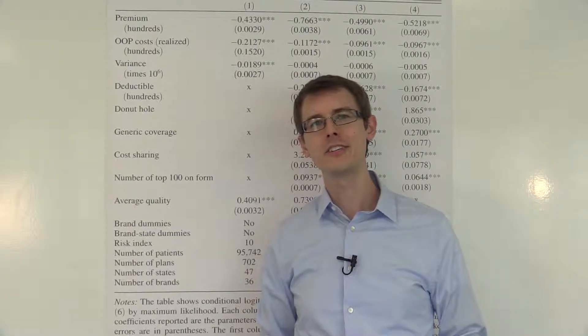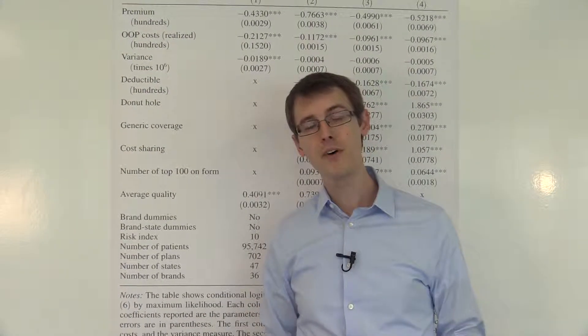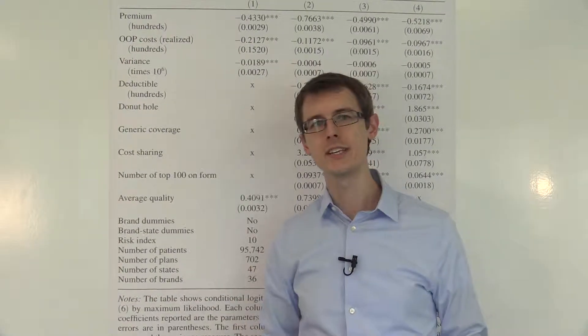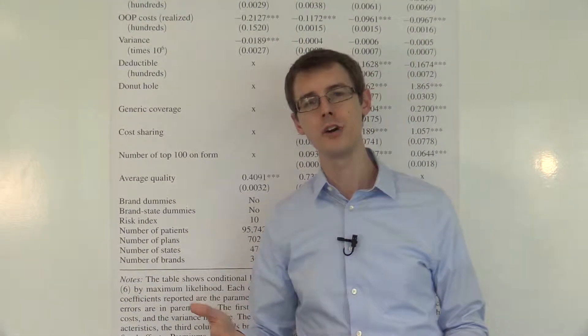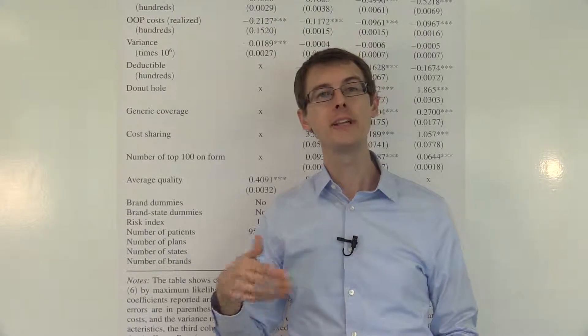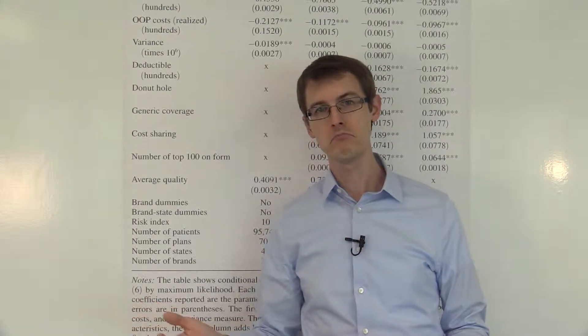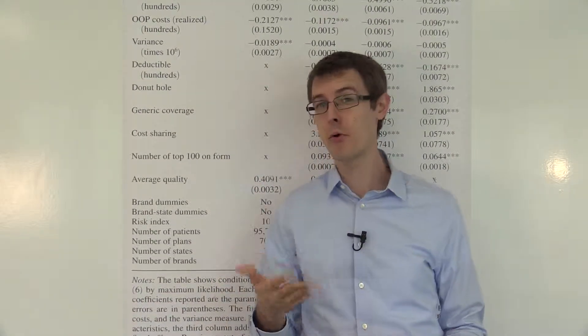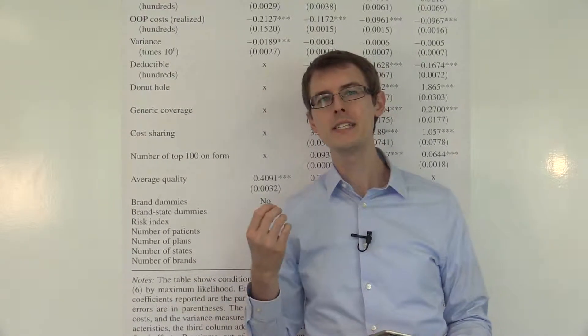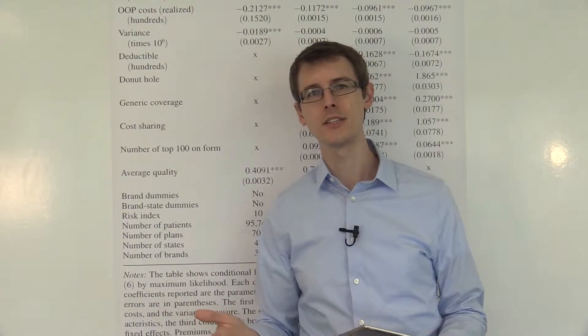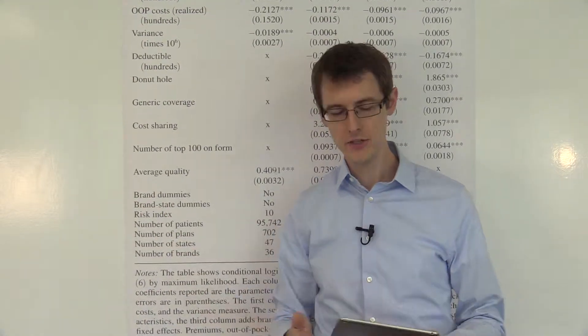So, how could we actually get senior citizens to make better choices? They make a few policy proposals. One thing you could do is provide individualized information to each senior citizen, things like sending them a letter that says, last year you spent this much money on prescription drugs under health plan A. If you had signed up for health plan B, you would have spent this much money on prescription drugs. So, you can actually just do the accounting for them by sending them a letter. Another policy you could think of is requiring doctors or pharmacists to help out with these decisions for the senior citizens, instead of leaving them on their own to pick among all these over 40 health insurance plans.